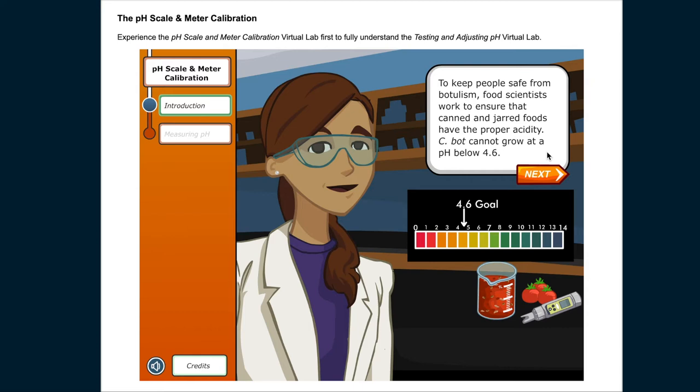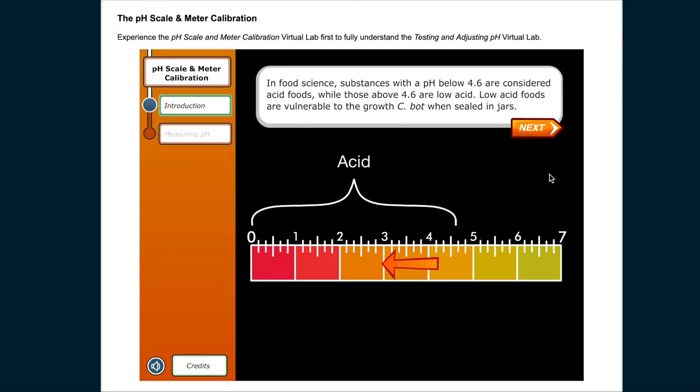C. bot cannot grow at a pH below 4.6. In food science, substances with a pH below 4.6 are considered acid foods, while those above 4.6 are low acid foods and are vulnerable to C. bot when sealed in jars.